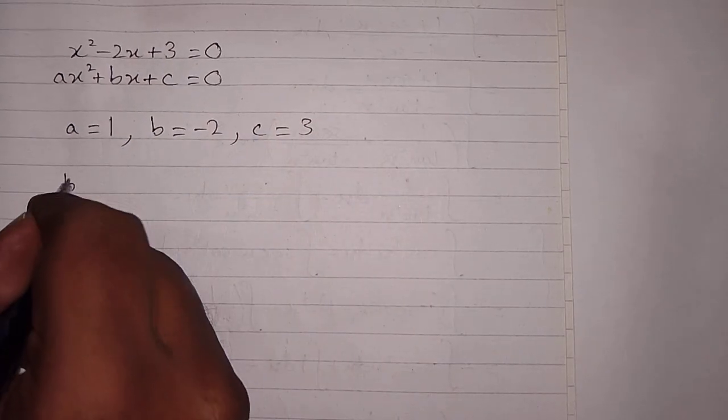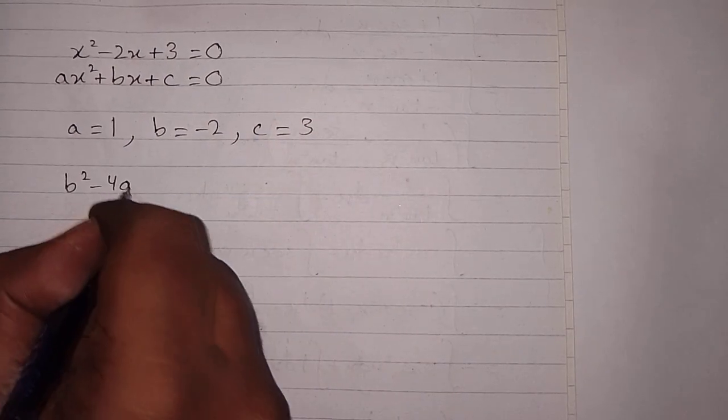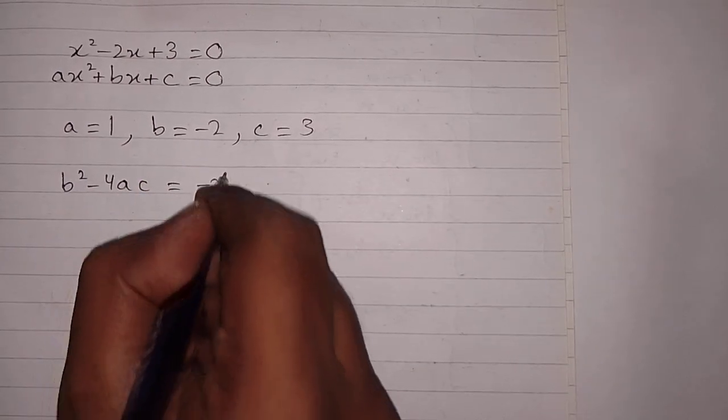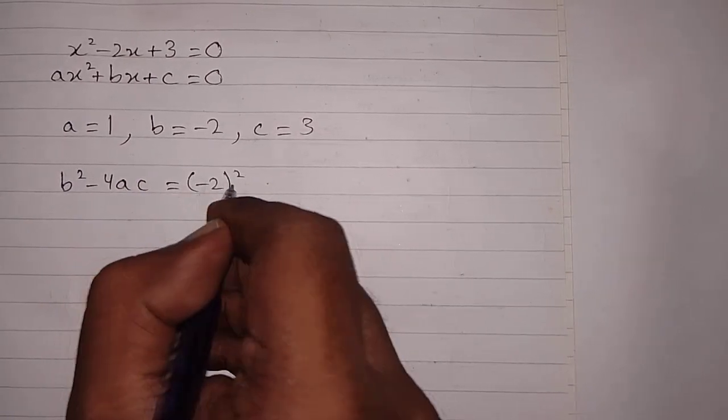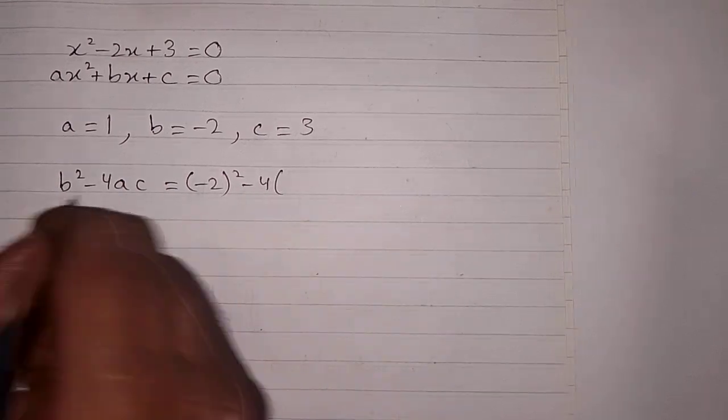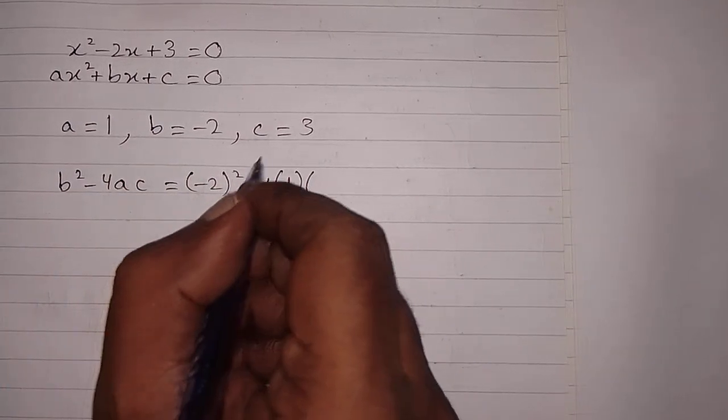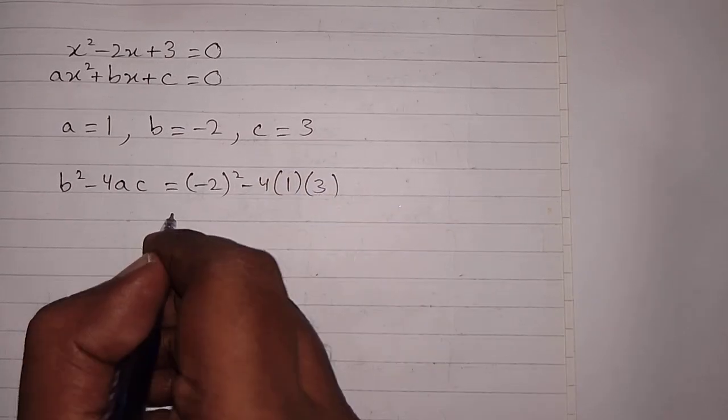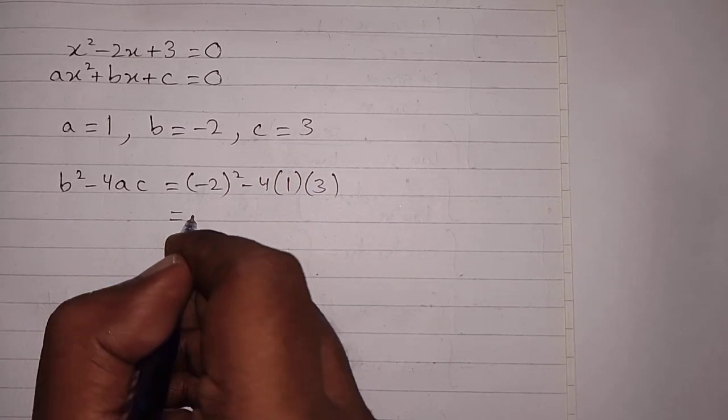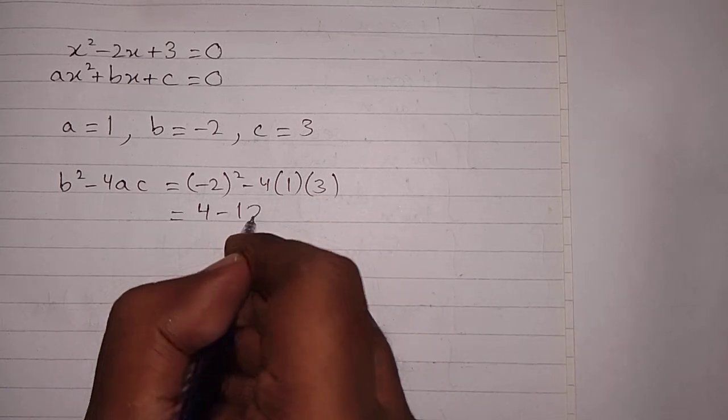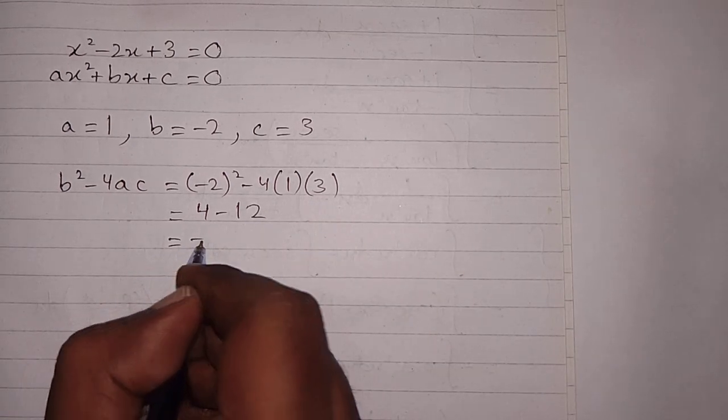Now we find the discriminant of the equation, which is b squared minus 4ac. First we put the value of b, which is minus 2, so we have the square of minus 2 minus 4 times a, which is 1, times c, which is 3. The square of minus 2 is 4, and minus 4 times 1 times 3 is minus 12.